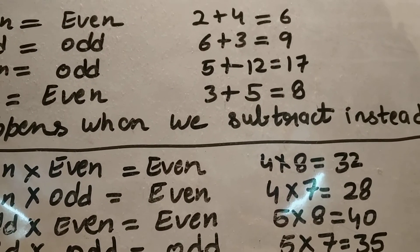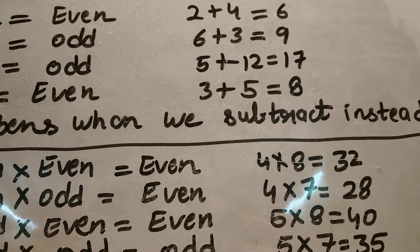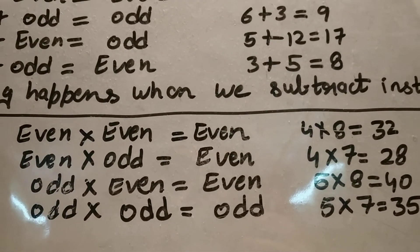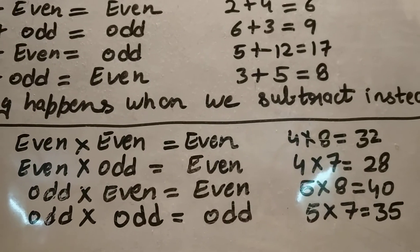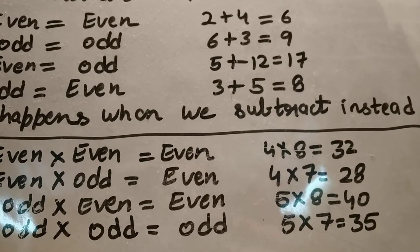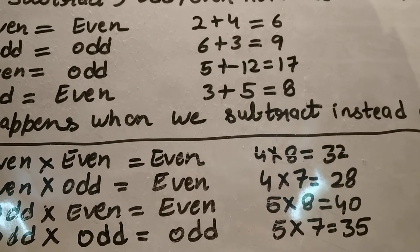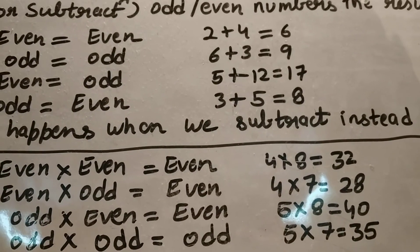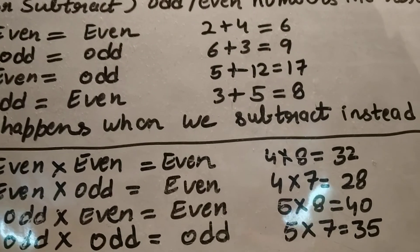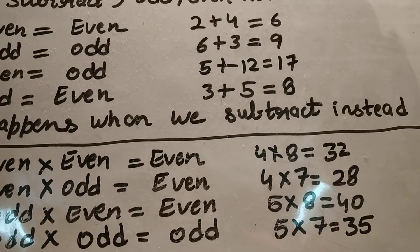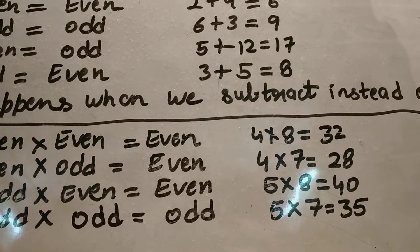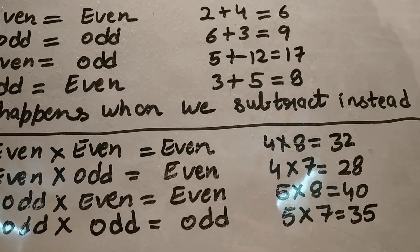Odd multiplied by even gives even: five times eight is forty, and zero in the ones place is even. Finally, odd multiplied by odd gives odd: five times seven is thirty-five, which is an odd number. So that is the end of the vlog.